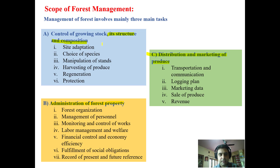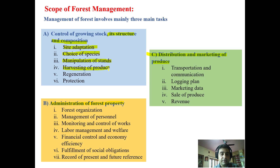How we are going to control our growing stock — its structure and composition — means different kinds of species, the type of site we have chosen for the forest, and the choice of species to raise any kind of forest. How the manipulation of stands is going to be done through different forestry operations like thinning or any other silvicultural operation.